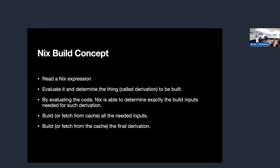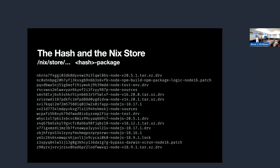Nix will then build or fetch from cache all the various needed inputs, and then build or fetch from the cache the final derivation. The cache could be the Nix ecosystem's standard cache out there, or it could be a local binary cache — one that you operate for your organization. It then produces several artifacts that go into the Nix store, which is on your computer at /nix/store. It's a flat directory with thousands or tens of thousands of files and directories, and it all begins with a hash.